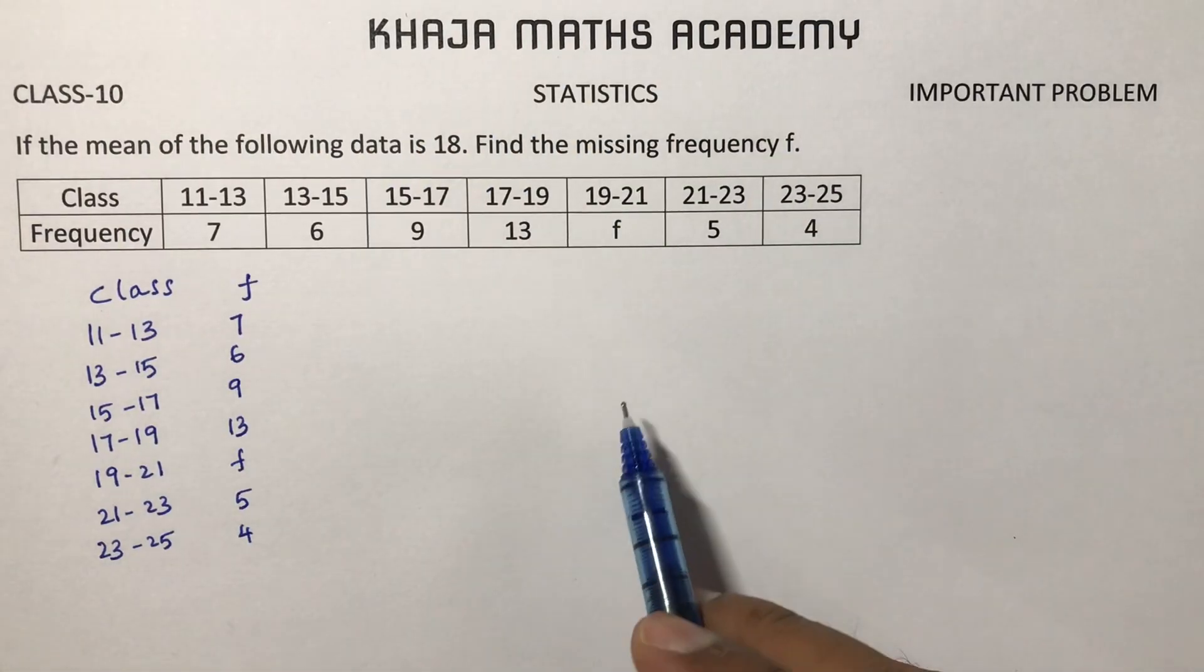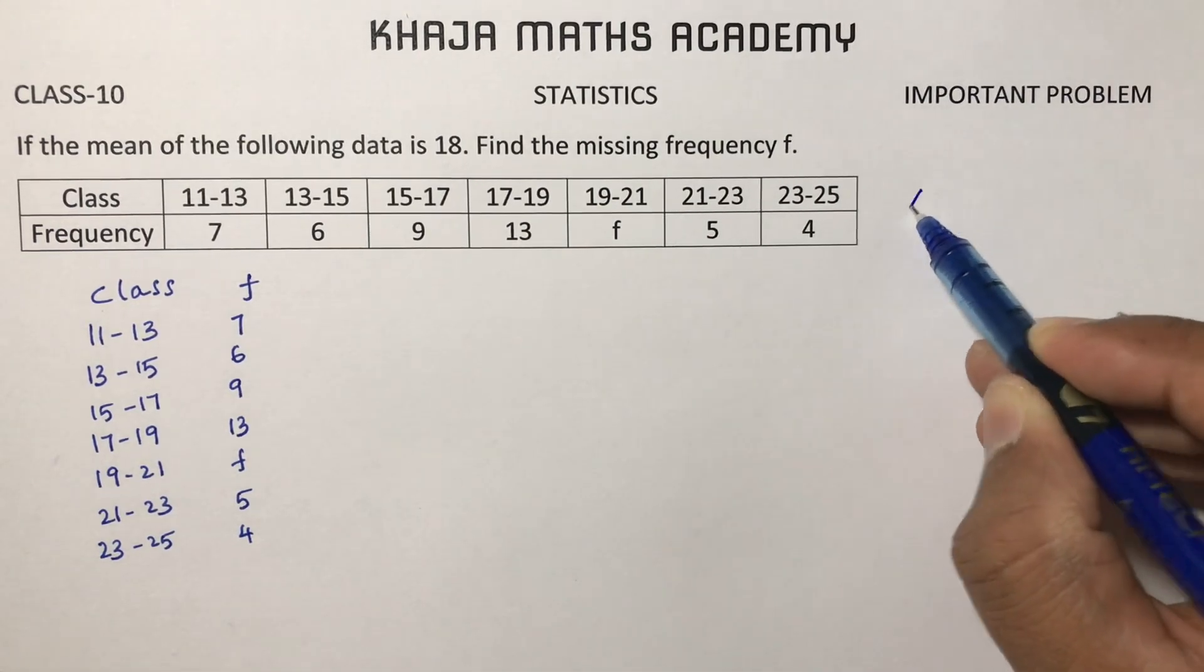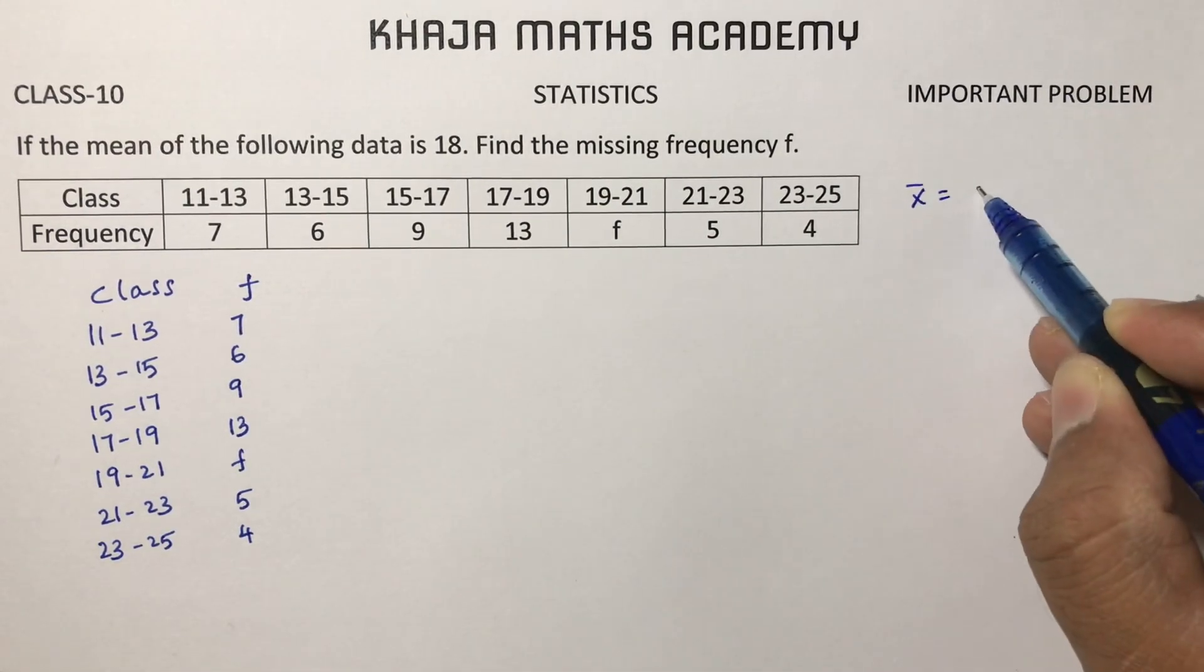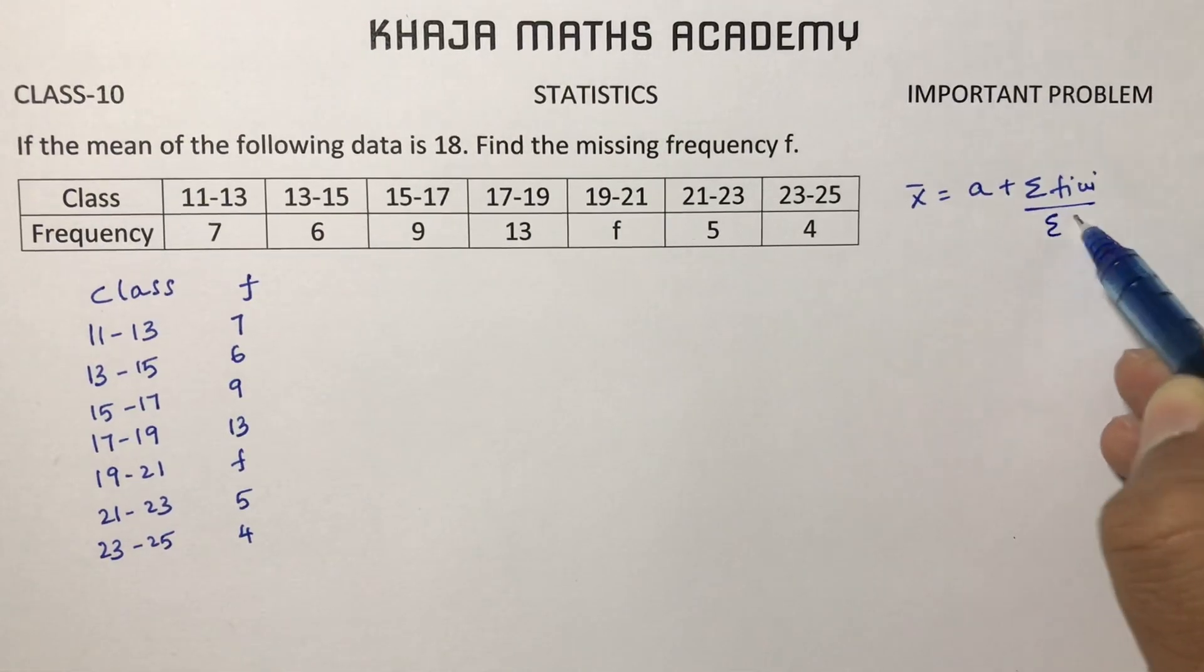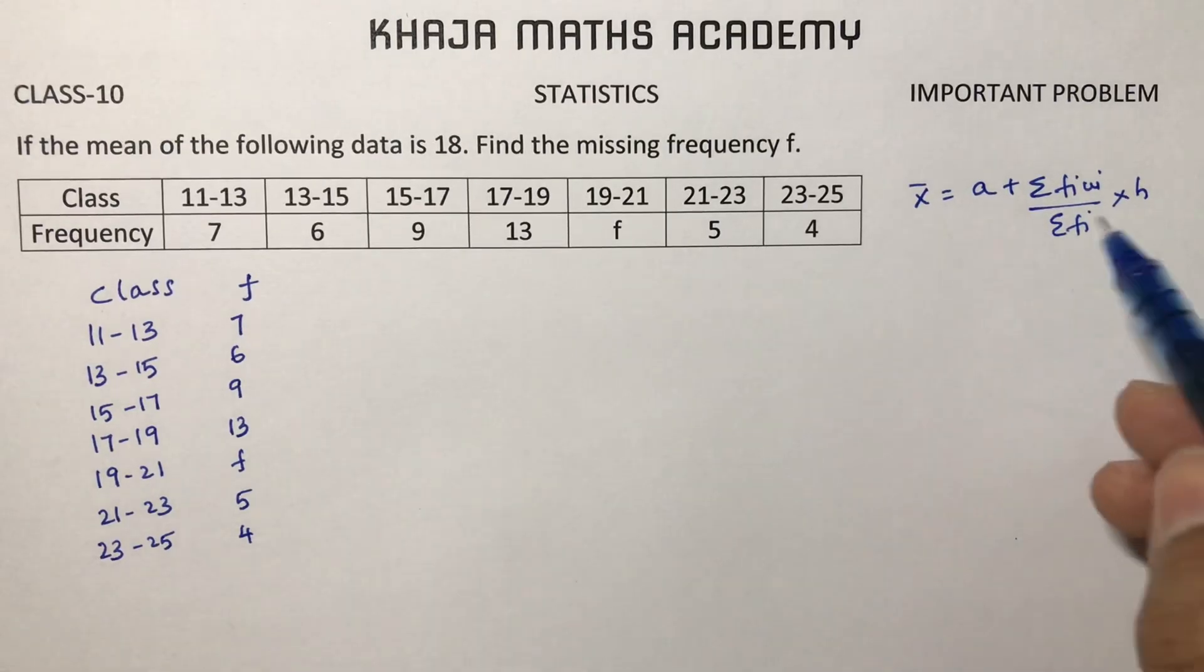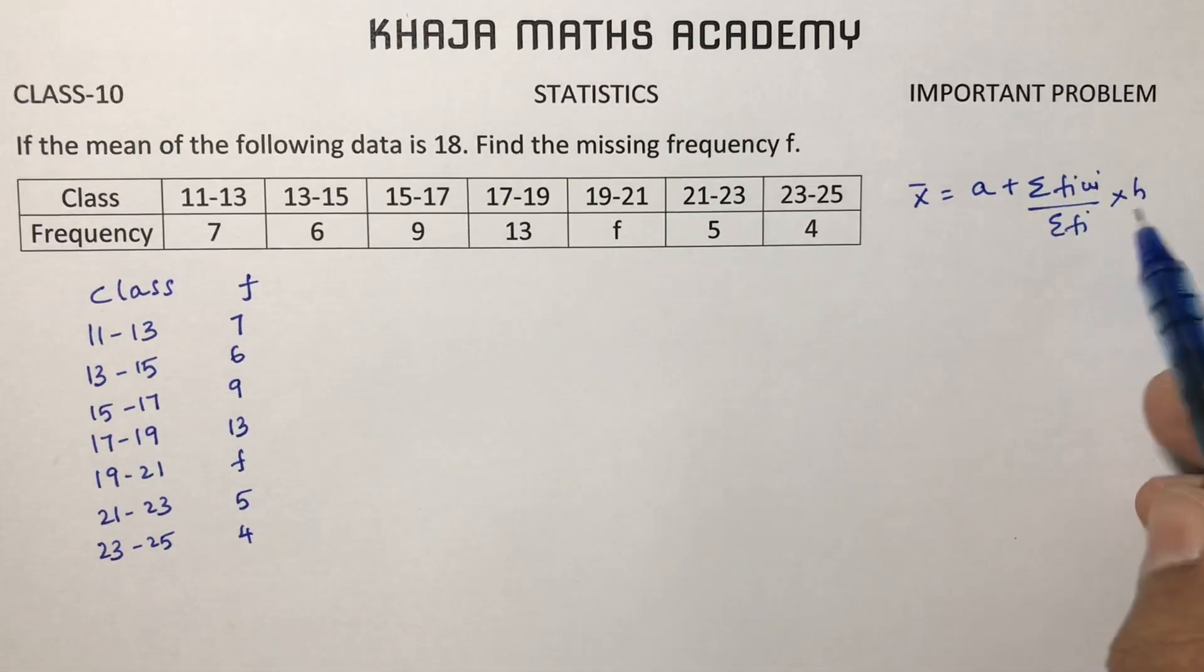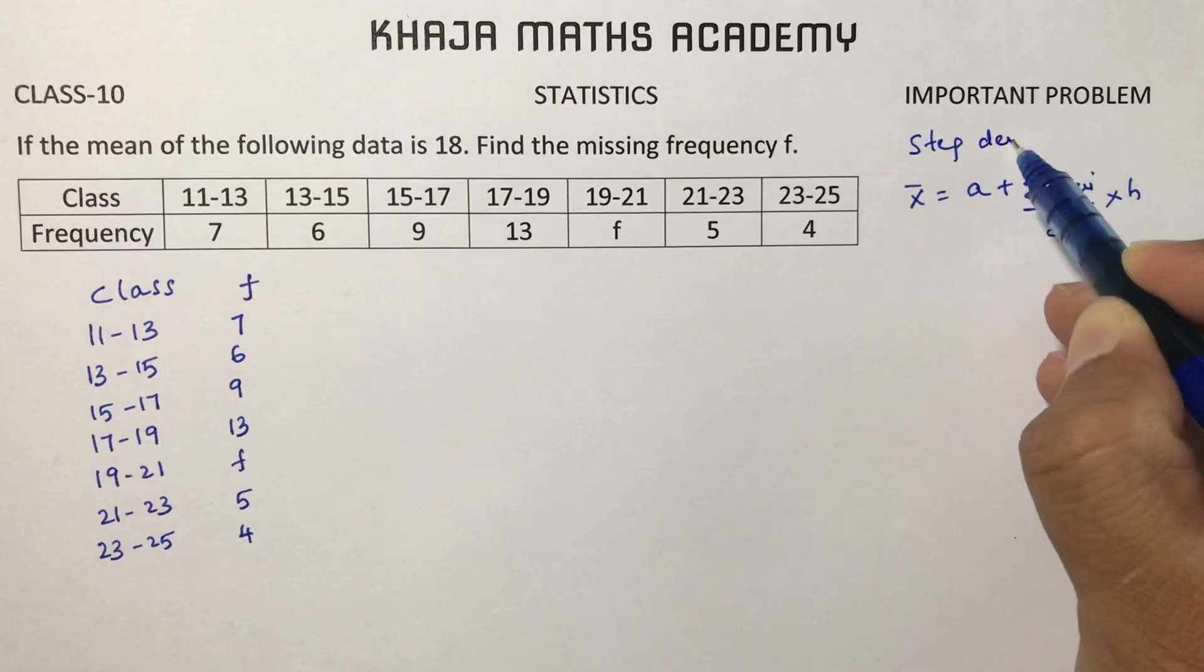The same problem we'll do by step deviation. Step deviation formula is mean x bar equals a plus sigma Fi ui by sigma Fi into h. I'll solve this missing frequency problem by using step deviation method.